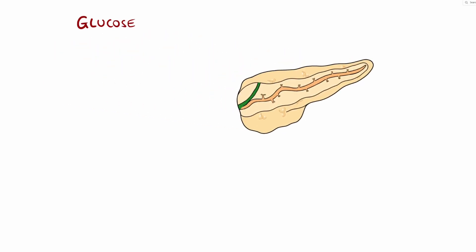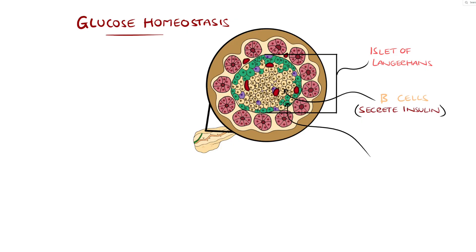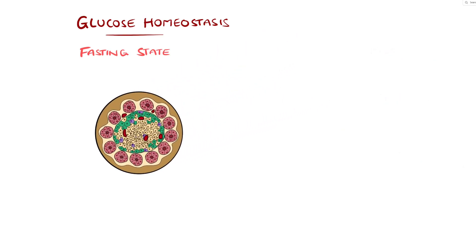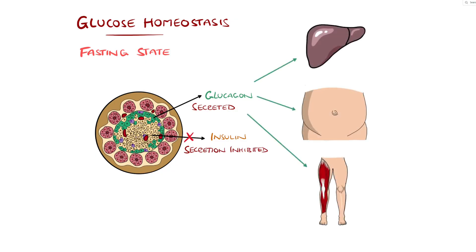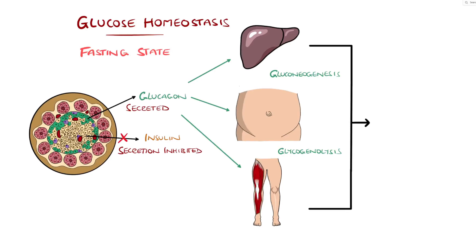Maintaining euglycemia, meaning normal glucose levels, involves a tightly regulated interplay between insulin secretion from pancreatic beta cells in the islet of Langerhans and insulin sensitivity at target tissues, such as the liver, muscle, and adipose tissue. Normally, in the fasting state, low insulin and elevated glucagon — a hormone secreted by pancreatic alpha cells in response to hypoglycemia — stimulates hepatic gluconeogenesis and glycogenolysis, ensuring a steady glucose supply to the brain and other vital organs.